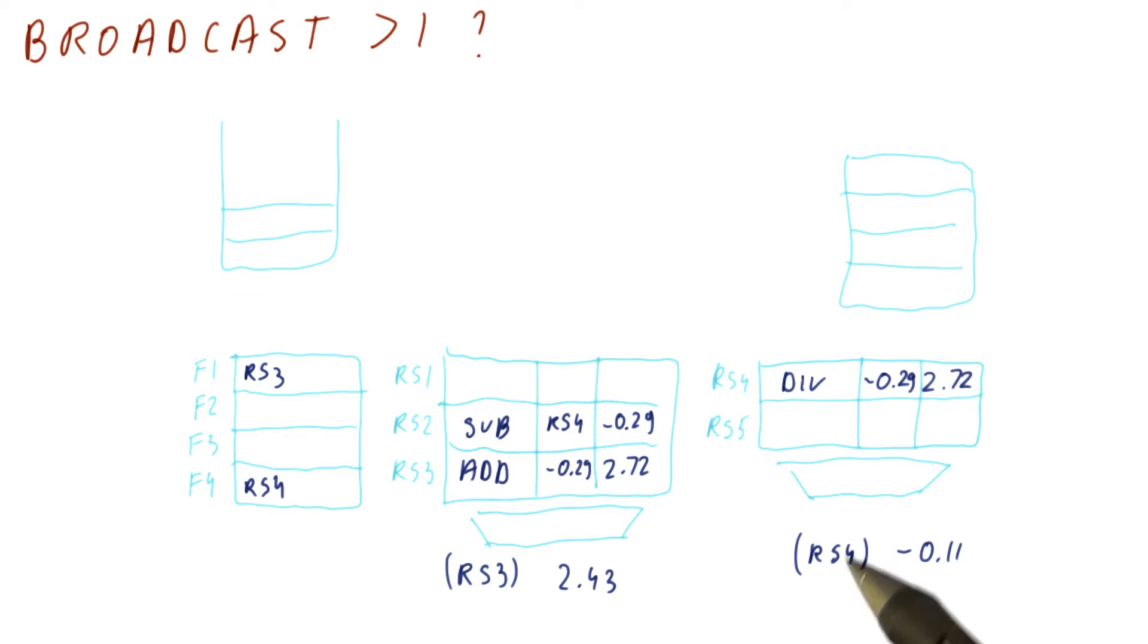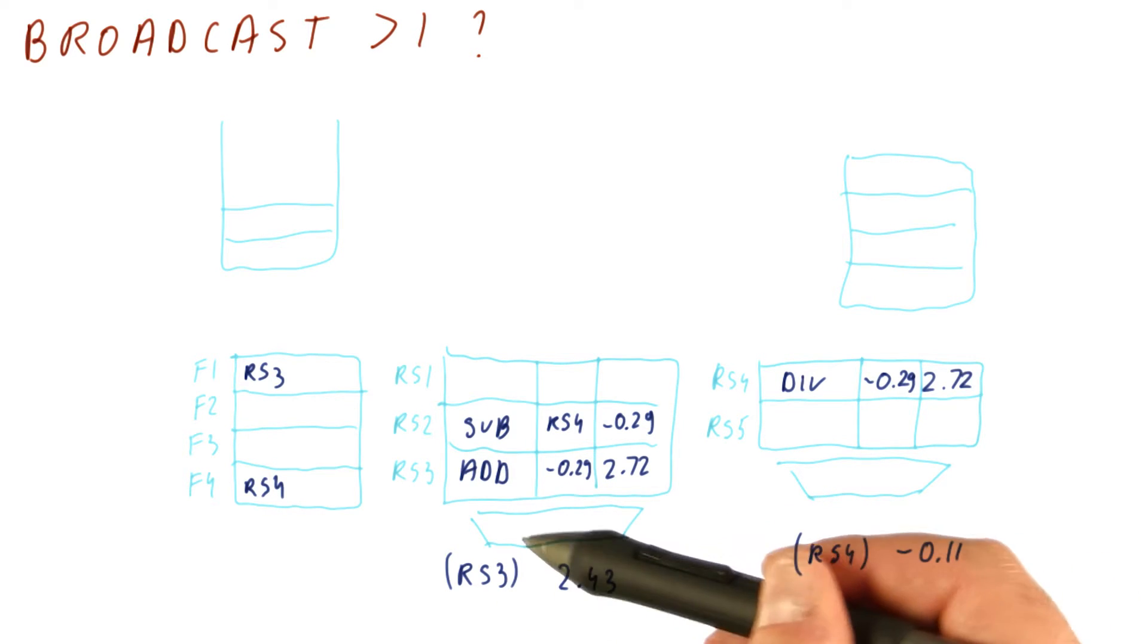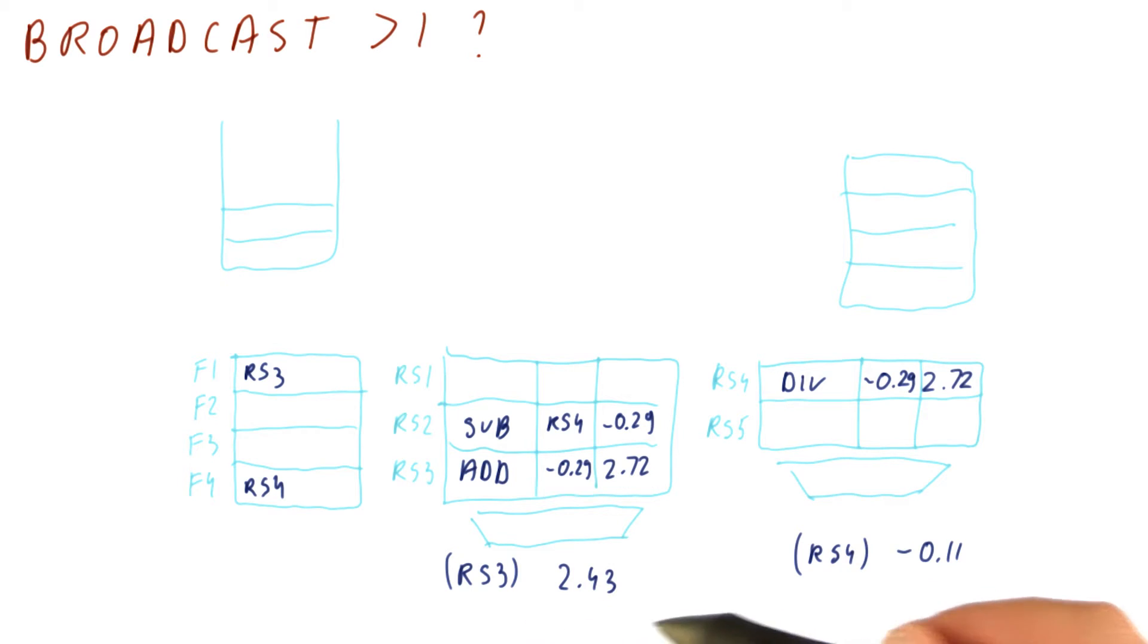But the situation is that somehow this divide here has finished in the multiply divide unit at the same cycle when the add here has finished in the add unit. And now if we have only one of these broadcast buses that we can use to broadcast the result, the question is which one of these two goes first.